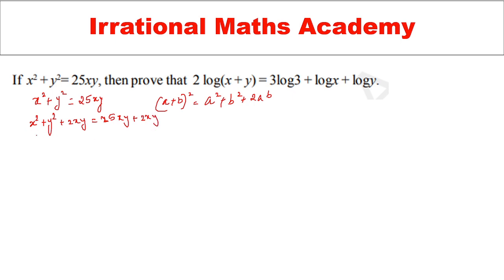Now if you look at here, it is a square plus b square plus 2ab, right? So this I can write as x plus y whole square equal to 27xy.